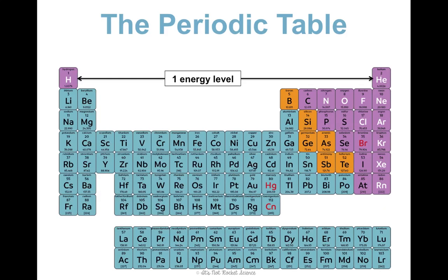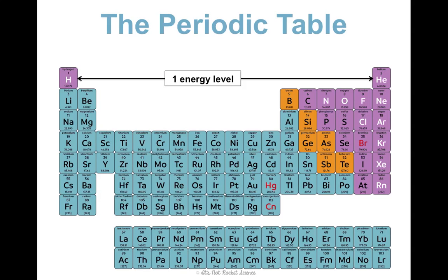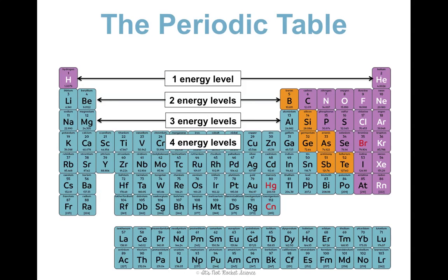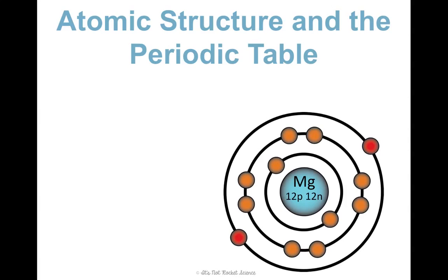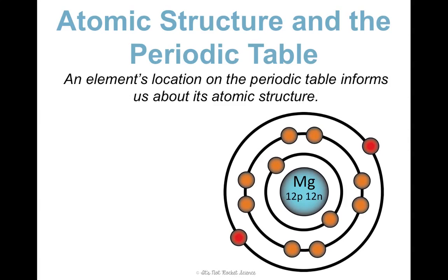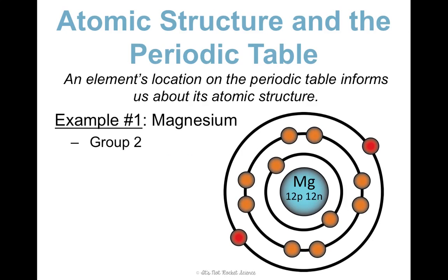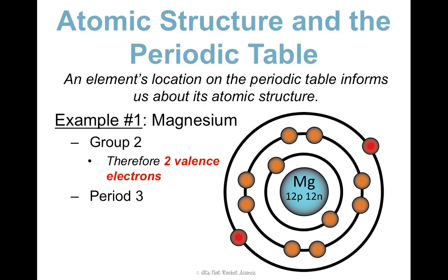Looking at our periodic table, the first period — hydrogen and helium — has one energy level, then two energy levels, three, four, five, six, seven. An element's location on the periodic table informs us about its atomic structure. For example, magnesium is in group two, so it has two valence electrons, which we can see in its drawing. It's also in period three, so it must have three energy levels, which we can see as three rings surrounding the nucleus. We're going to learn how to draw these in just a second.